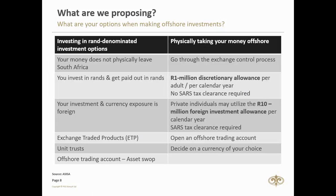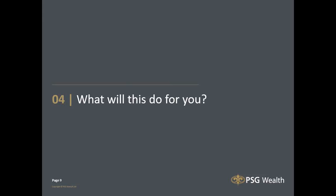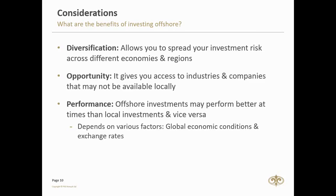Option three allows private individuals to take out an additional 10 million rand foreign investment allowance per calendar year, for which you do need a tax clearance from SARS. You open an offshore trading account and decide on your chosen currency. So the two main options are: physically take money offshore, or leave it here. The benefits: South Africa represents less than one percent of the world economy, so restricting yourself to domestic assets means foregoing extensive investment opportunities available in other markets — companies like Tesla, Apple, McDonald's, Mastercard, Visa, as well as biotechnology and nanotechnology.